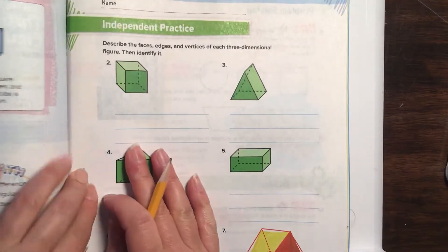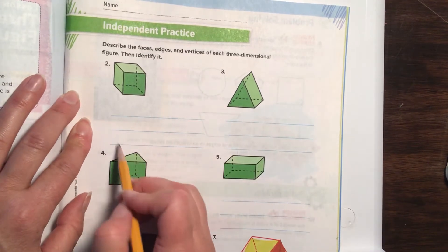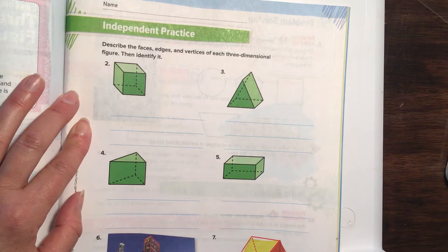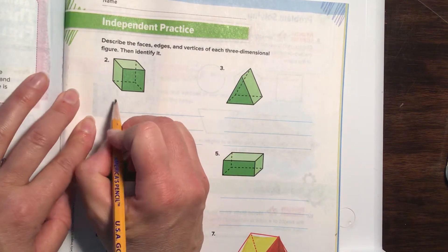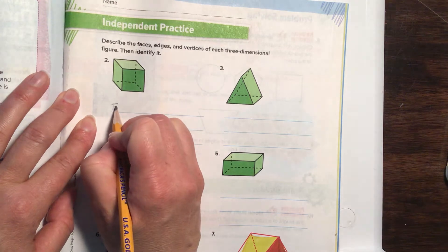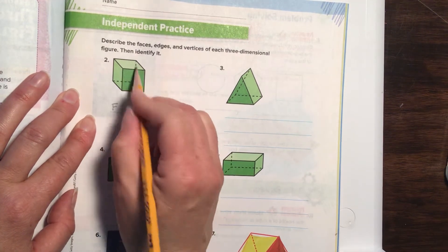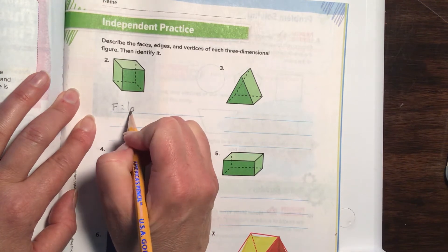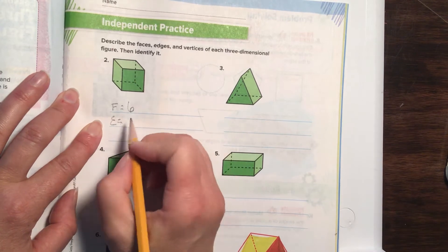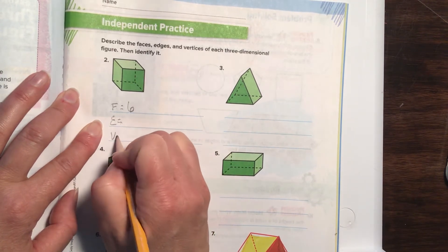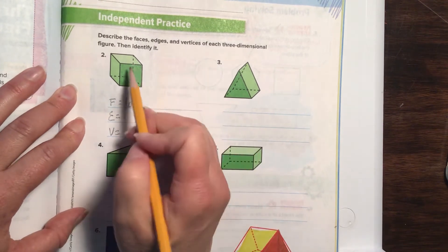Alright. Same story with this one. Describe the faces, edges, and vertices. So you're going to have three answers. And look, there are three lines, so we know there's going to be three answers and then identify it. So we're going to say, let's do the faces first. I'm going to do a little F for faces. It has how many faces? One, two, three, four, five, six—six faces. And I'm going to do a little E for edge and then a little V for vertices, just to make life a little easier.